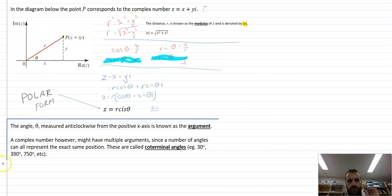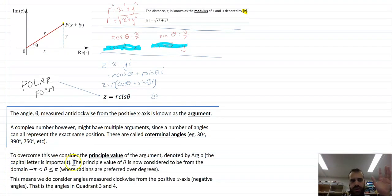So it's important, they're called coterminal angles. So we're not going to do that nonsense with complex numbers, because every complex number just has a position. So we can probably just give it a single argument, a single angle to deal with it. So to overcome that whole multiple angles thing, we're going to use something called the principal value of the argument. That's, we just call it arg z, capital ARG Z. Now, important to note, the principal value of theta is now considered to be between negative pi and pi, where radians are preferred over degrees. This means that we consider angles measured clockwise from the x-axis, negative angles and positive angles.